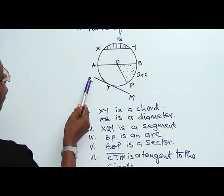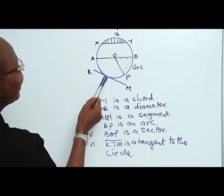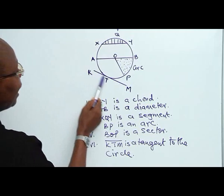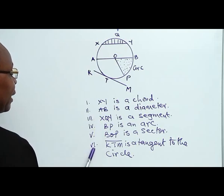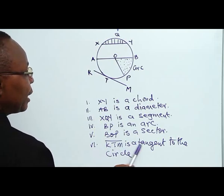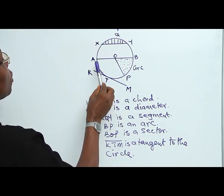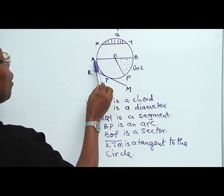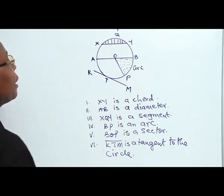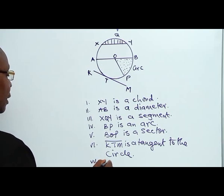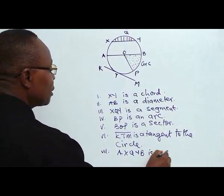Then we also have KTN — a straight line touching the circle at one distinct point, point T. This line that is touching the circle at this distinct point is called a tangent. So KTN is a tangent to the circle. These are the parts of a circle. And of course we know that half of a circle is called a semi-circle. So ASQYB is a semi-circle.